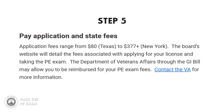Step five: pay the application and state fees. Application fees range from $80 in Texas to $377 plus in New York. The board's website will detail the fees associated with applying for and taking your PE exam. Now let's look at steps six through ten.